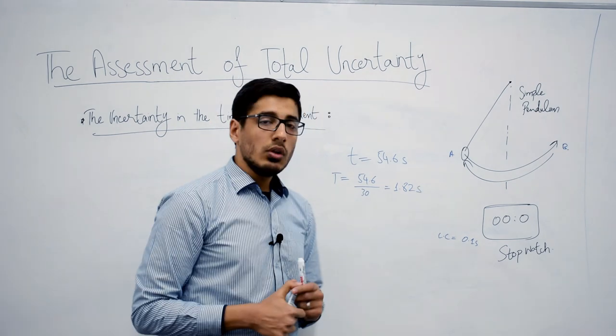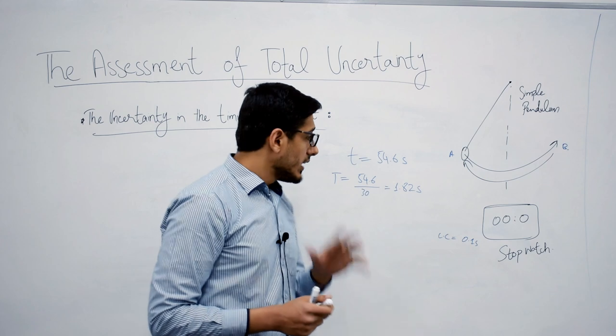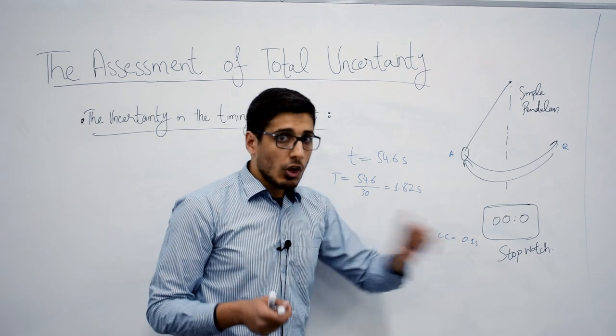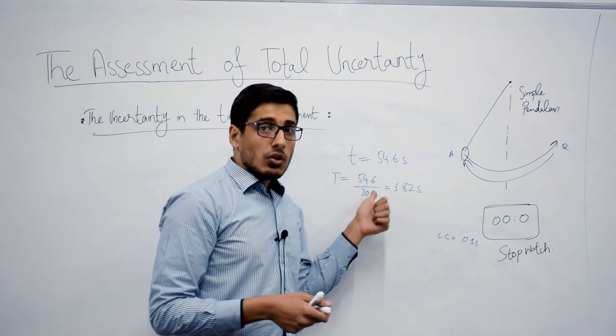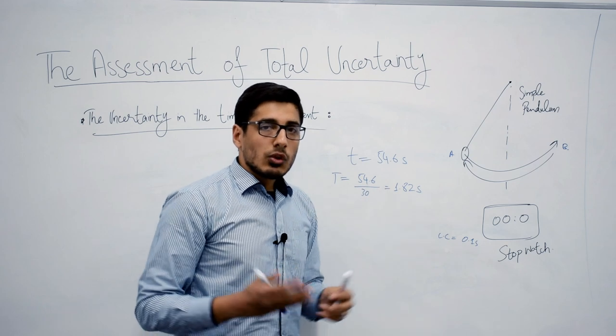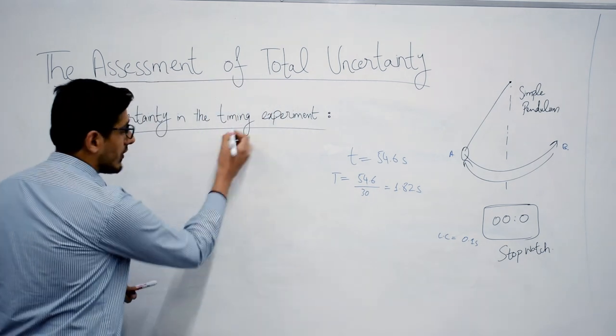Now is the time to go for the uncertainty, and keep in mind that the least count of the stopwatch is not going to be the uncertainty in your result. Here comes the rule for calculating the uncertainty in case of timing experiments.